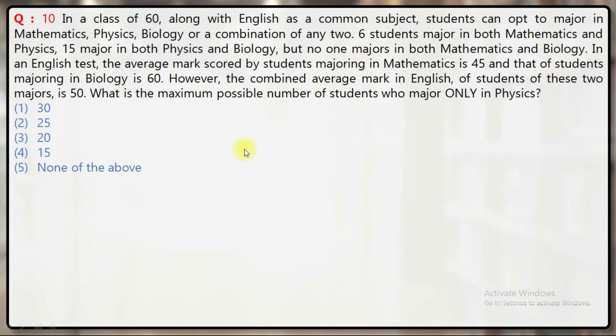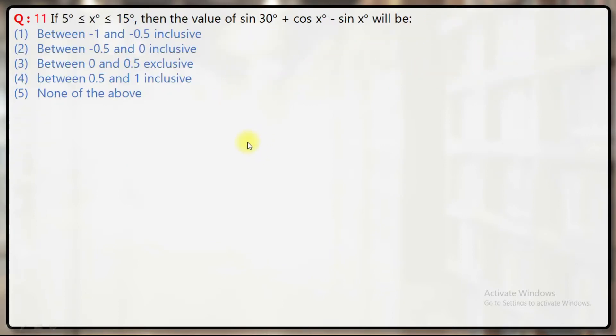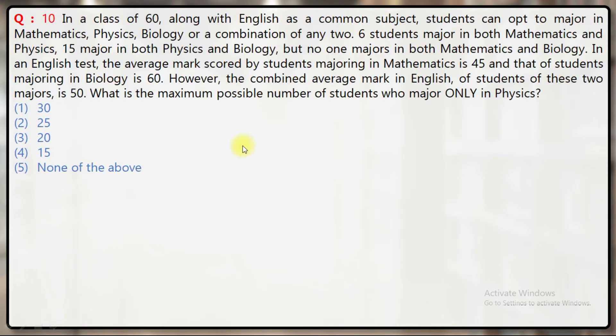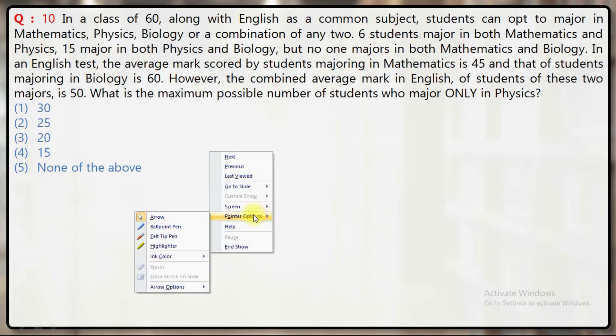In a class of 60, along with English as a common subject, students can opt to major in Mathematics, Physics, Biology, or a combination of any two. Six students major in both Mathematics and Physics, 15 major in both Physics and Biology. This is a question based on a Venn diagram, so let's draw a figure.